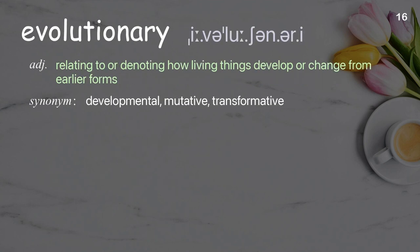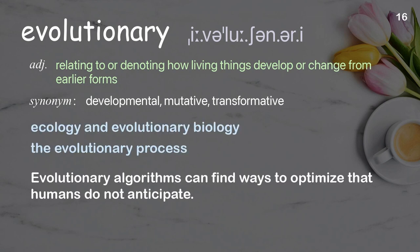Evolutionary: Relating to or denoting how living things develop or change from earlier forms. Examples: Ecology and evolutionary biology. The evolutionary process. Evolutionary algorithms can find ways to optimize that humans do not anticipate.